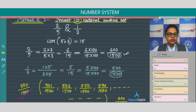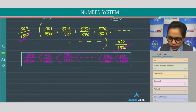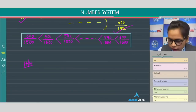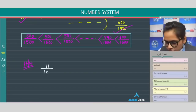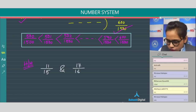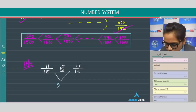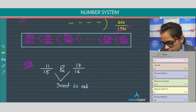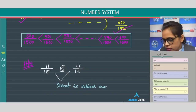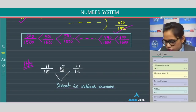For homework: the question is to insert 20 rational numbers between 11/15 and 17/16. Try to solve this using the LCM method we just discussed.